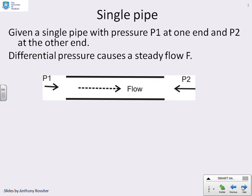Let's start then with a single pipe. So here we've got a schematic, which shows there's a pressure P1 at one end of the pipe, and a pressure P2 at the other end of the pipe. And when these two pressures are different, then you're going to get a steady flow rate F.